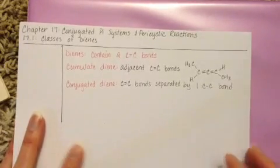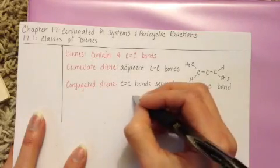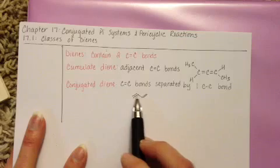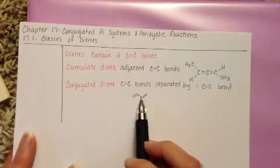Most of the dienes that we are going to study in Chapter 17 are conjugated dienes. And there is an example of a conjugated diene, where your double bonds are separated by just one single bond.